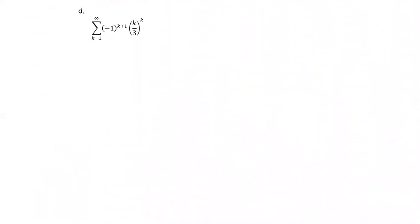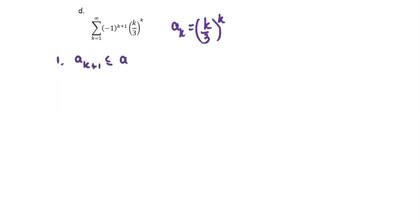For this example, we have the summation of negative 1 to the power k plus 1, multiplied by k over 3 raised to the k power. The ak term is k over 3 raised to the k power. Again, we check the conditions for the alternating series test: number 1, ak plus 1 is less than or equal to ak; number 2, the limit of ak as k approaches infinity equals 0.